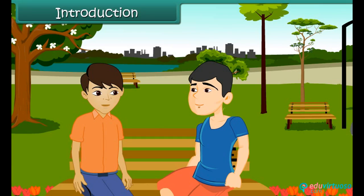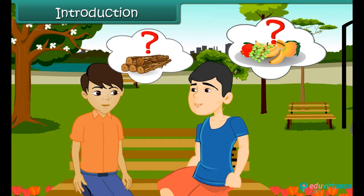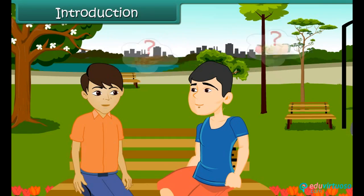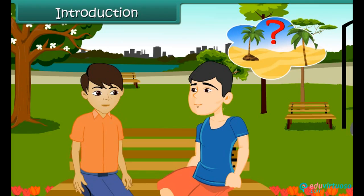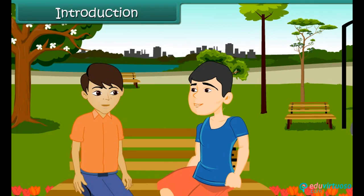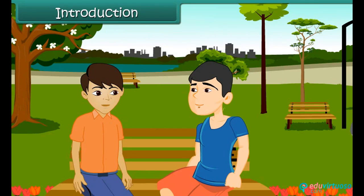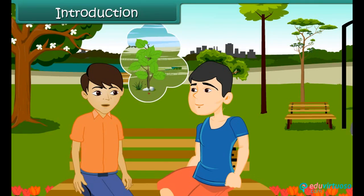She asked: what are they which give us fruits, give us wood, which can grow on land as well as in water, which are found in homes as well as in forests? It's simple, dear — they are called plants.